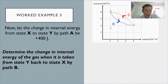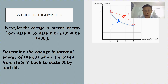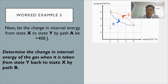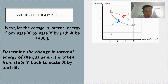The second part of work example 3: if the change in internal energy by process A is plus 400 joules — representing a gain in internal energy of 400 joules — what will be the change in internal energy through process B, which goes from y to x as shown by the red curve? Again, it's important to note that the change in internal energy is path independent. It only depends on the state.